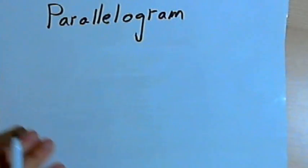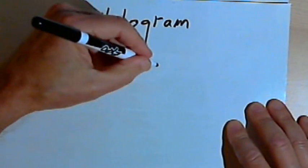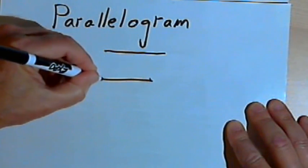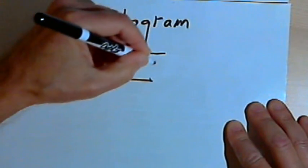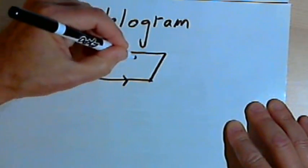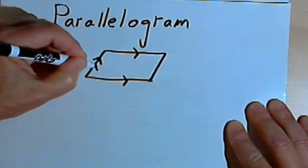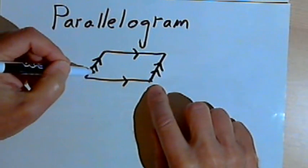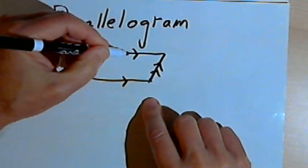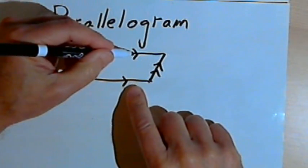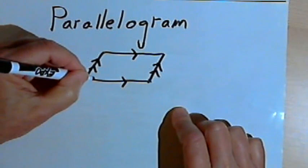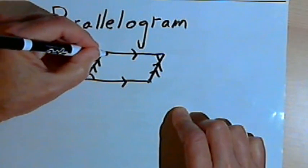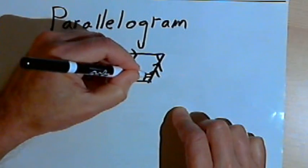After that we can go on to parallelograms. A parallelogram is a quadrilateral — a four-sided figure — and in a parallelogram we have two pairs of parallel sides. When we have two pairs of parallel sides, those pairs are also going to be the same length, so we have two pairs of sides that are the same length. Also, the opposite angles in a parallelogram are going to be congruent, so we'll have two pairs of opposite angles that are the same size.